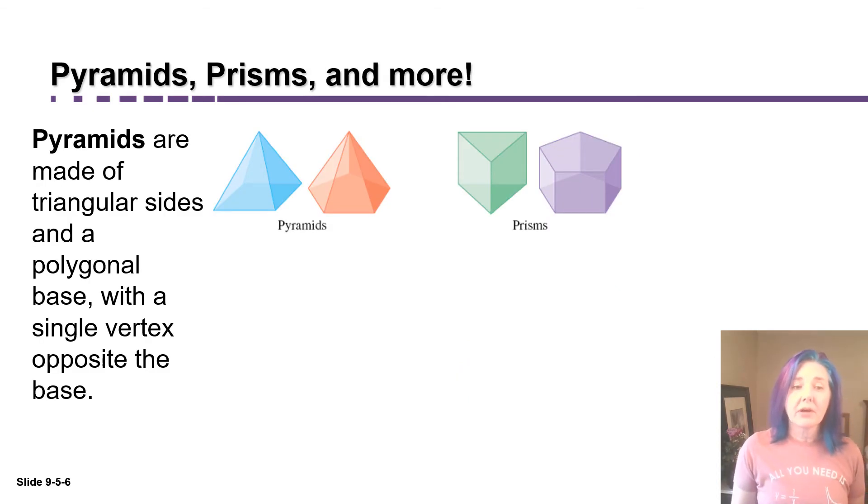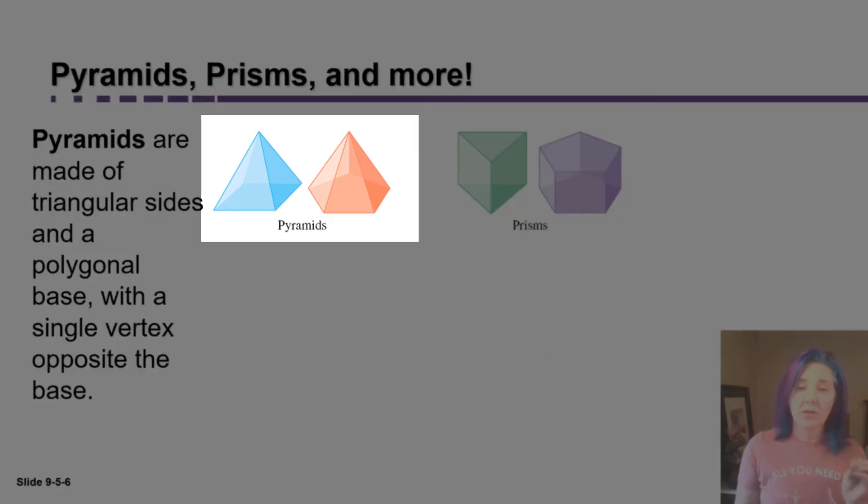Pyramids are made up of triangular sides and a polygon for the base. It could be a square, it could be a pentagon, it could be a triangle. And then it comes up to a single point at the top called the vertex. So the blue and orange figures are pyramids.